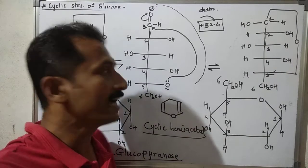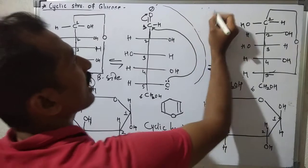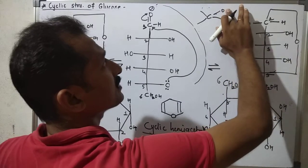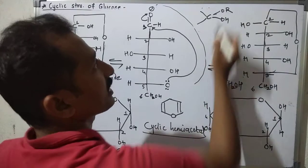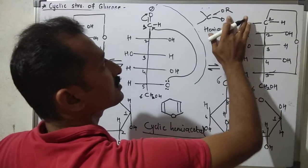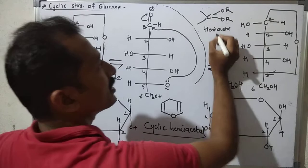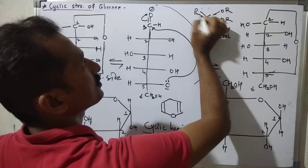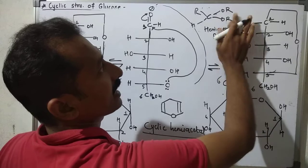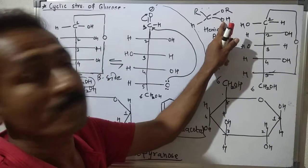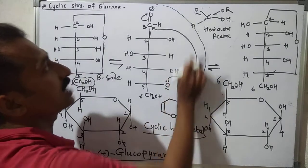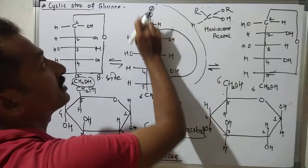In the reactions of an aldehyde, if any carbon is connected to two OH groups — that is a hemiacetal. If we replace one H by R it becomes hemiacetal, and replacing the second H by another R gives an acetal. When the 5th carbon's oxygen attacks the anomeric carbon 1, a C-O linkage forms.